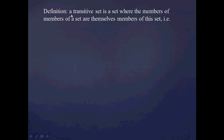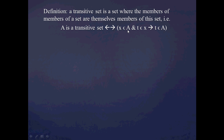And if you've been playing around with the definition of the natural numbers at all, you may have already observed that something like this notion of transitivity is going to hold. We're going to define a transitive set as a set where the members of the members of a set are themselves members of that set. That is, A is a transitive set if and only if: for all x in A and all t in x, t is also in A.